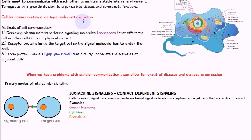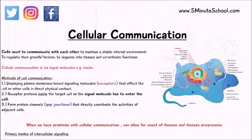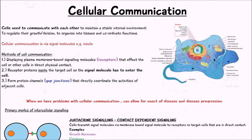Signal molecules can be things like insulin — they can be hormones, or they can be much smaller molecules. The important thing to understand is that we have a signaling cell which is going to release some form of signal molecule, and that signal molecule is going to reach a target cell and induce a response.